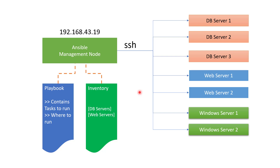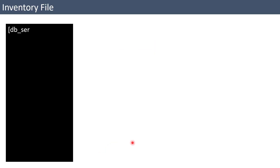There are different protocols Ansible uses to connect to different systems. For example, to connect to Linux or Unix-based systems it uses SSH, and to interact with Windows machines it uses WinRM. Now let's talk about the inventory file.